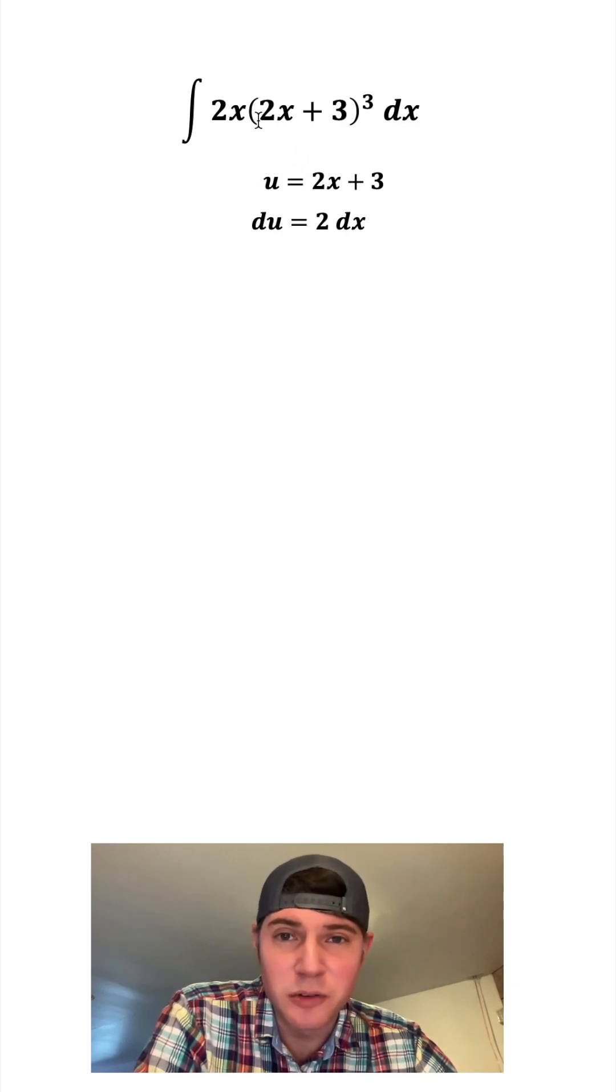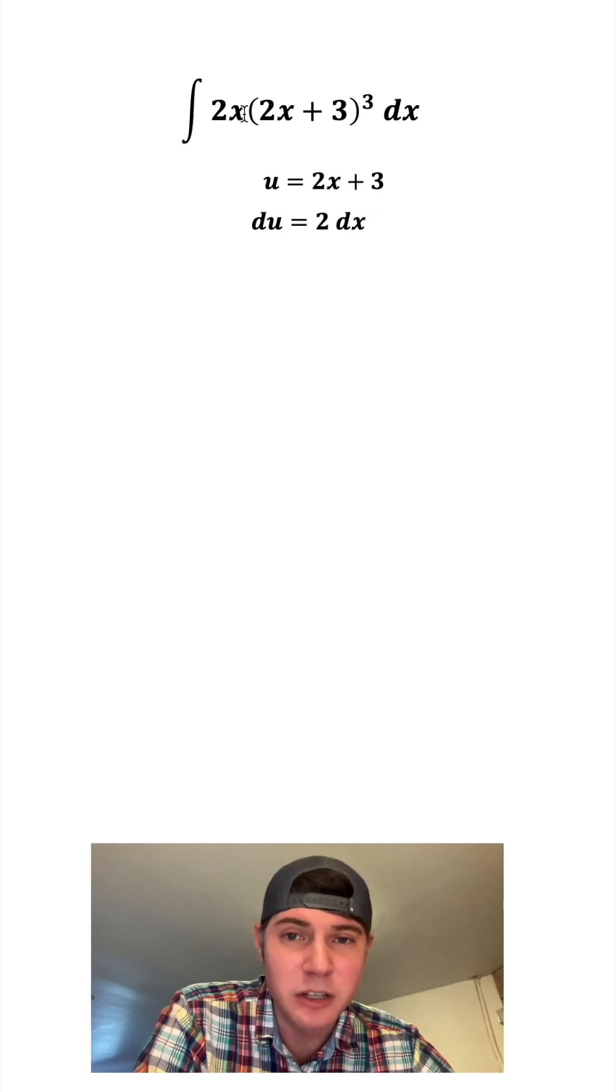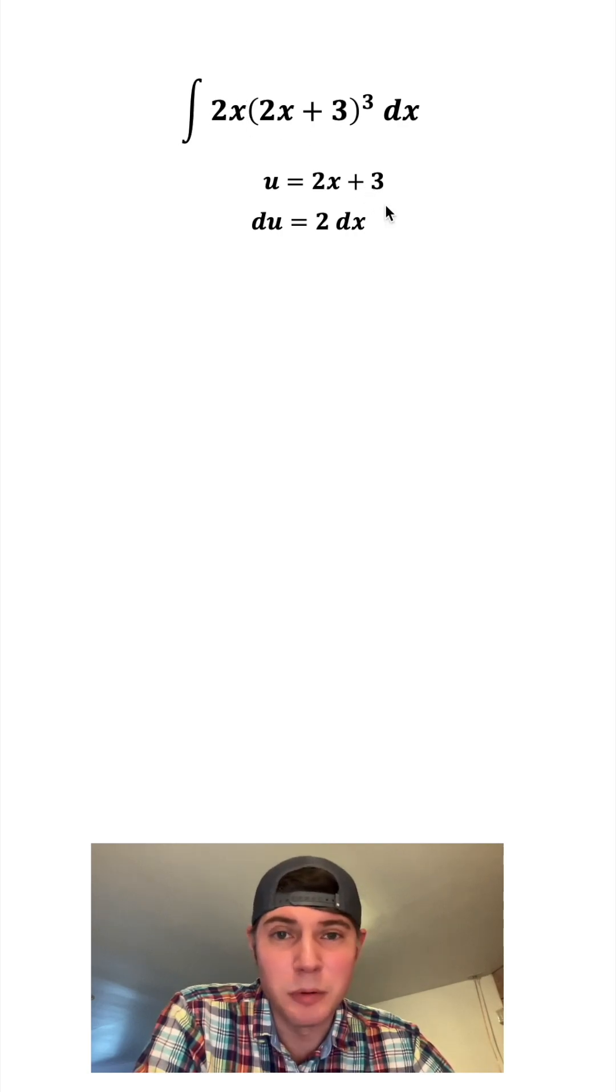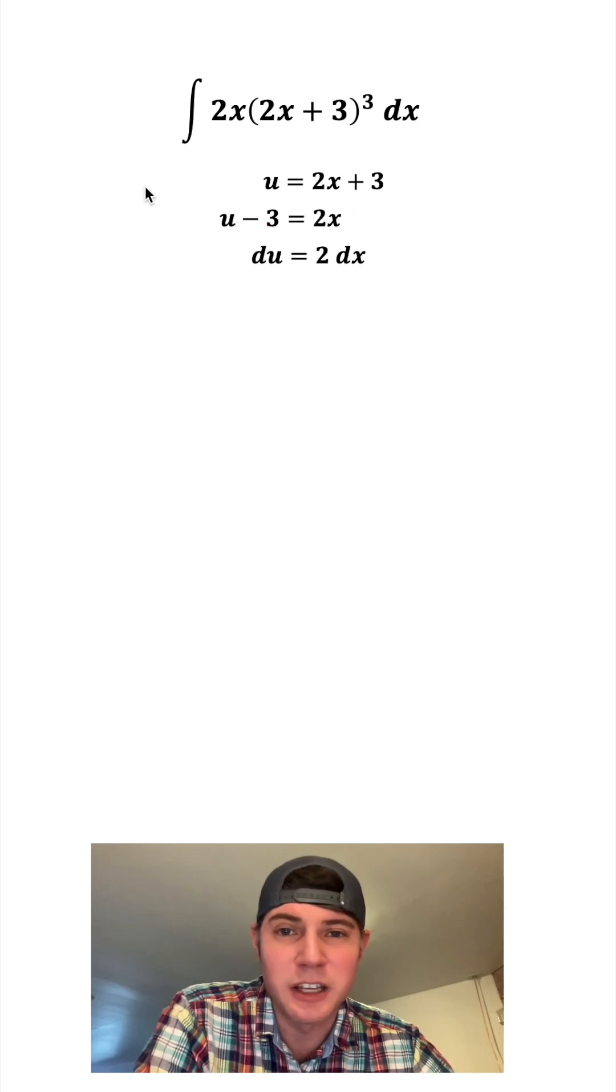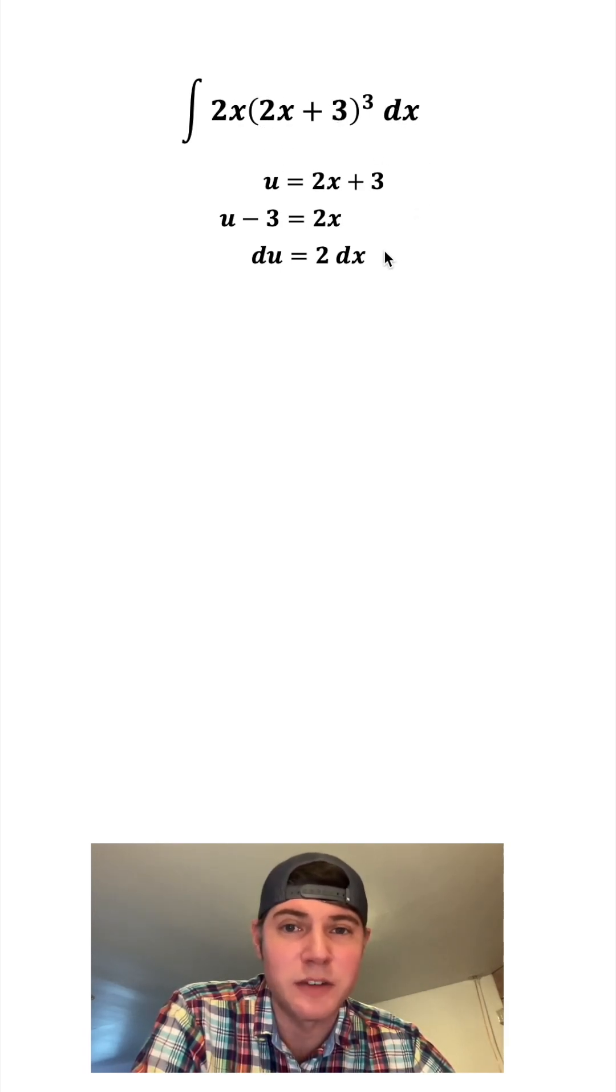So right now we have a u-substitution for the 2x plus 3 and a u-substitution for the dx, but we don't have a u-substitution for this 2x. But we can easily get that from here. If we just subtract 3 from both sides, we'll get u minus 3 equals 2x. Now we have 2x in terms of u, we have 2x plus 3 in terms of u, and we also have dx in terms of u.